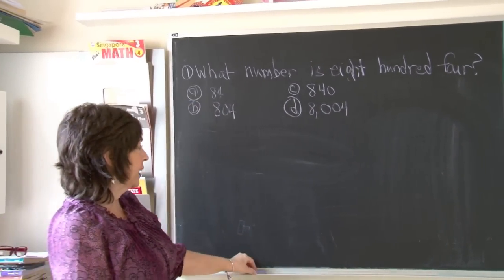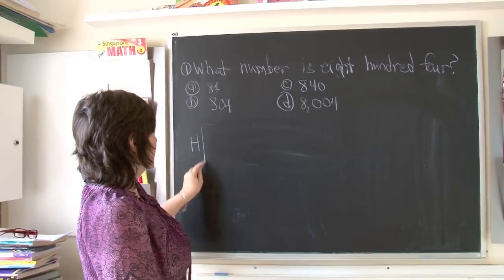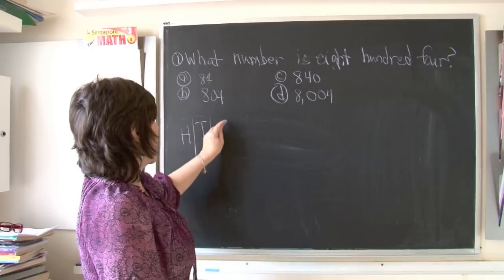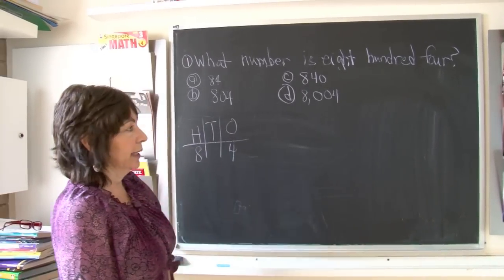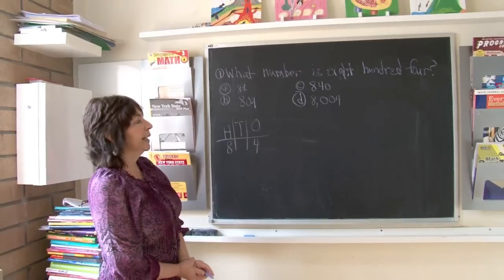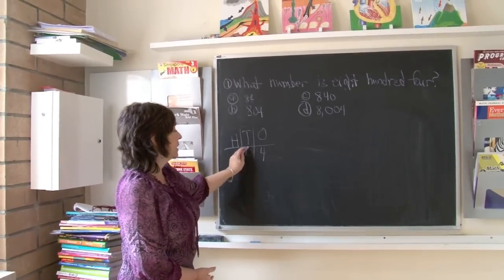If I was to write it as hundreds, tens, and ones, it said 804. There was no room—it did not say tens column.